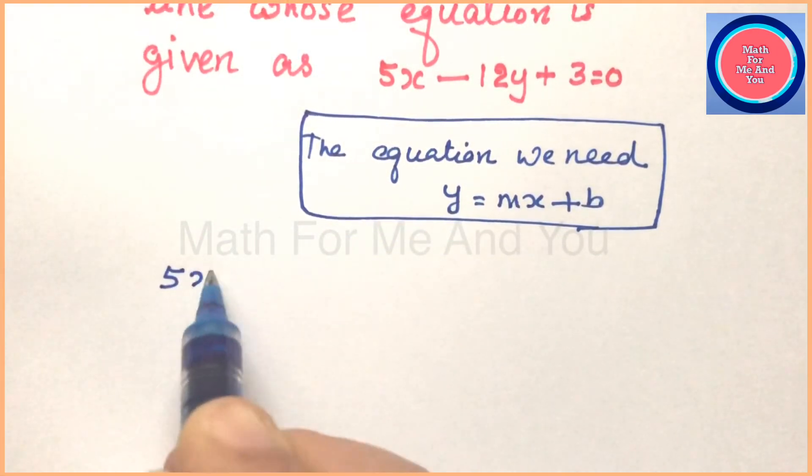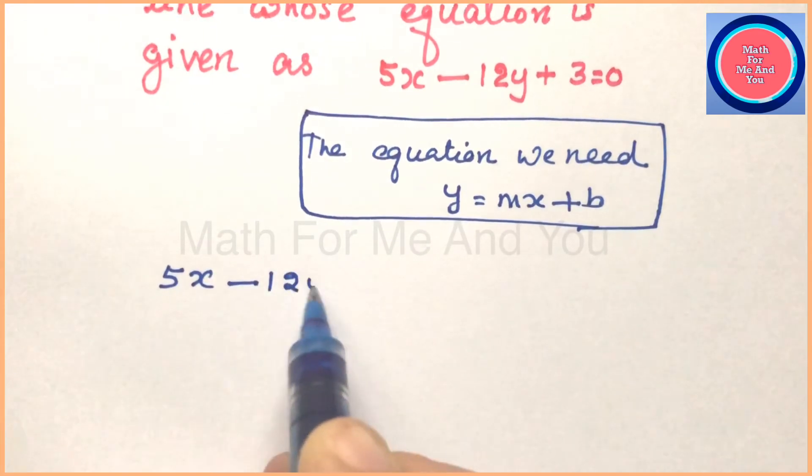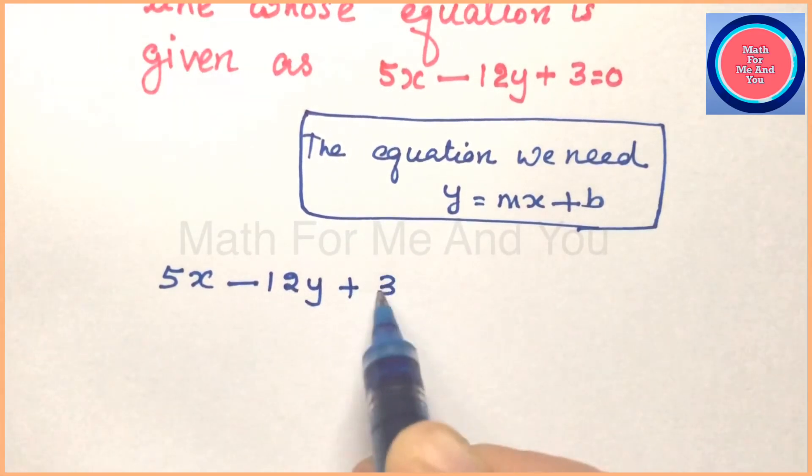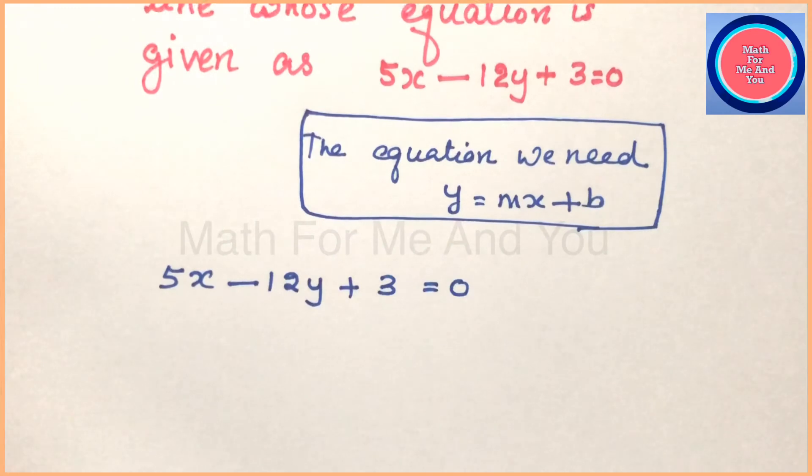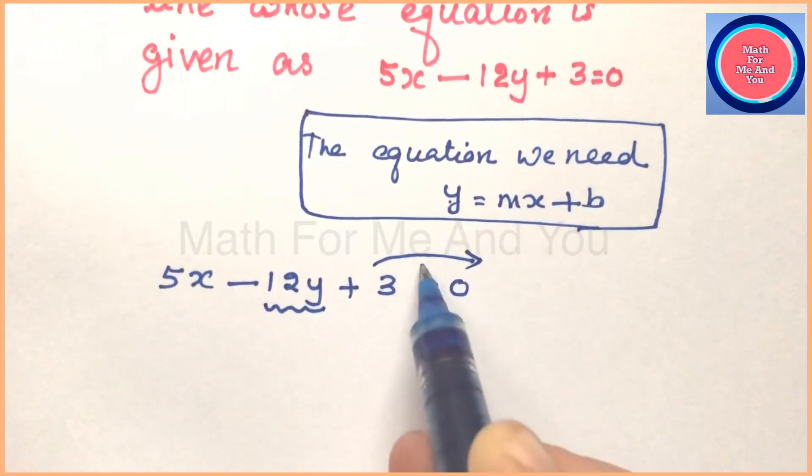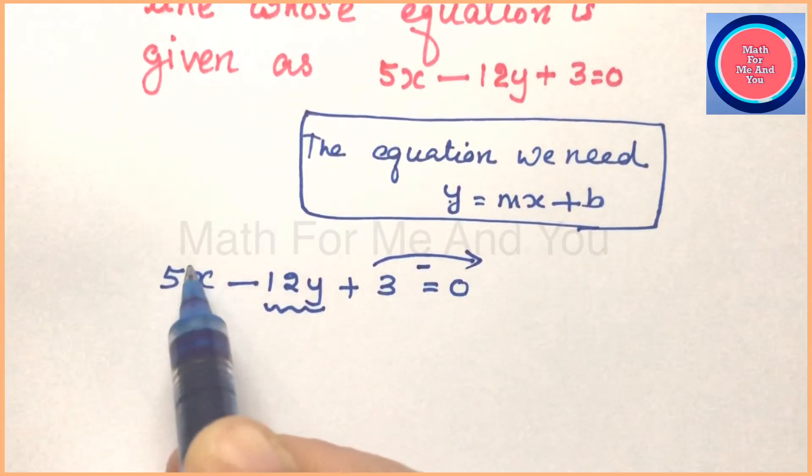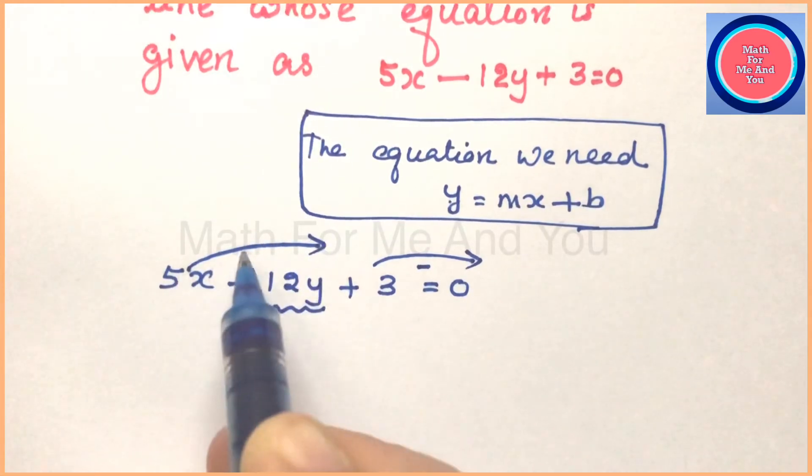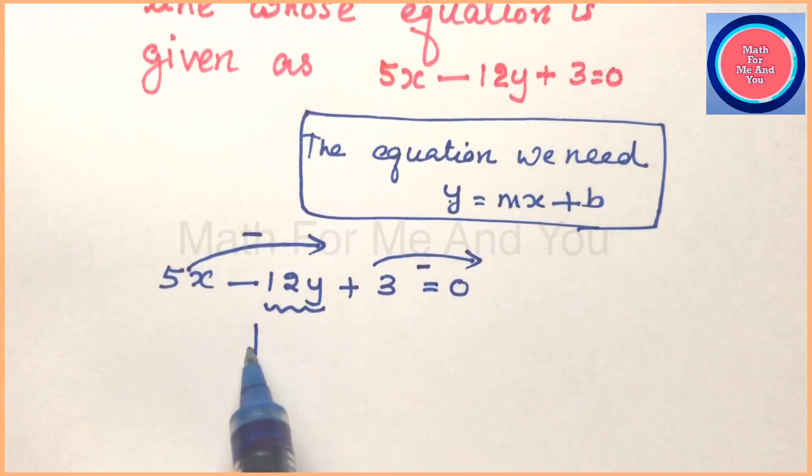Whatever the linear equation we get, we can change to y equals mx plus b and find the slope and y-intercept. The given equation in this question is 5x minus 12y plus 3 equals 0. We need only y term on the left side. Keep minus 12y on the left side, move 5x and 3 to the right side of equal sign.